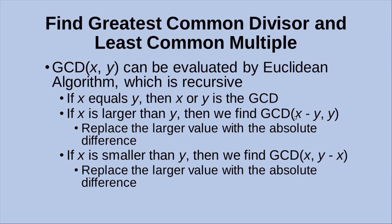Originally this place was x, but now it is replaced by the absolute difference of the two numbers. Because x is larger than y, x minus y is a positive value representing the difference of the two numbers. On the other hand, if x is smaller than y, we just find out the GCD of x and y minus x. Here we also replace the larger value with the absolute difference — because y is larger than x, y minus x is simply equal to the absolute difference, which is a positive number. So we replace the original value of y with y minus x.